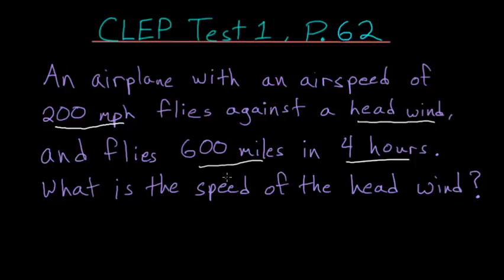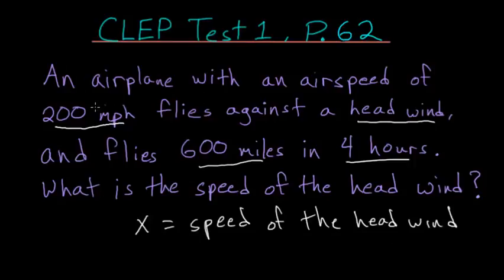In this problem, we need to make a variable for the speed of the headwind. We can say that x is the speed of the headwind. Since this speed is taken away from the speed of the airplane, the total speed that the airplane travels compared to the ground is 200 minus x. This is the ground speed of the plane.